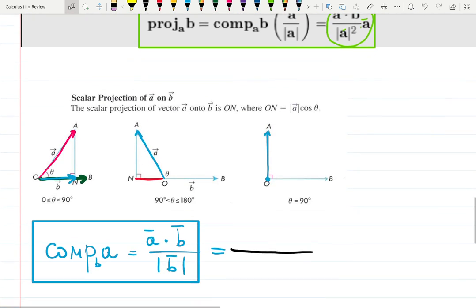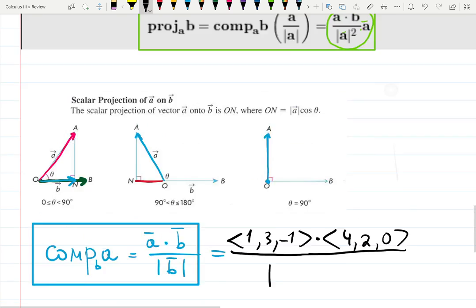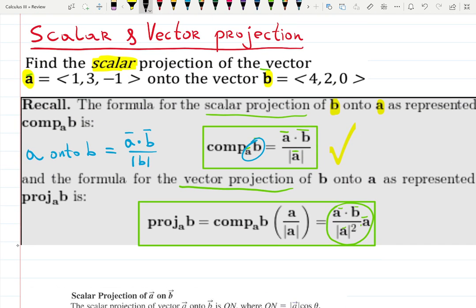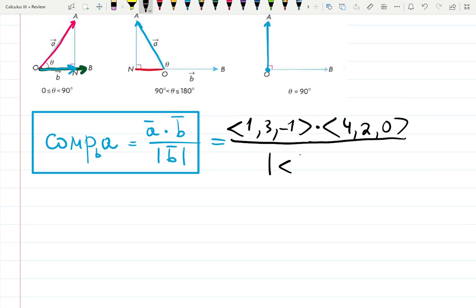1, 3, and minus 1. 1, 3, and minus 1 dot product multiplied by 4, 2, and 0. I see it in front of me. Divided by the magnitude of which one? A or B? The one onto we're projecting. So B: 4, 2, and 0, the size or magnitude of 4, 2, and 0.